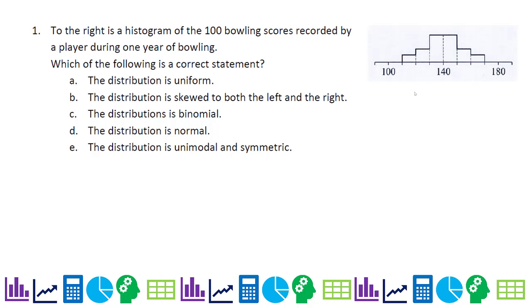The distribution is uniform, the distribution is skewed to both the left and the right, the distribution is binomial, the distribution is normal, the distribution is unimodal and symmetric.